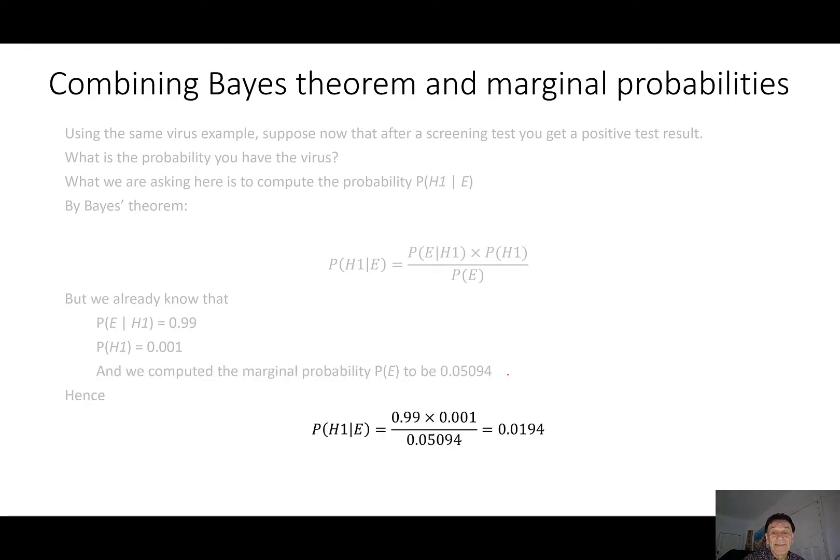And so we just plug them into the formula, and we get that result. It's less than 2%. So despite the positive test result, given these false positive and false negative probabilities and the prior, there's less than a 2% chance that you have the virus.